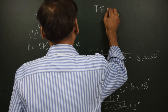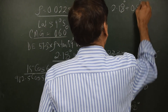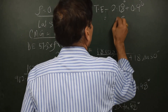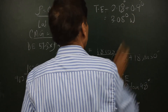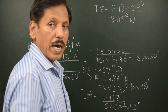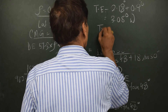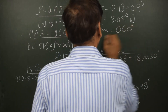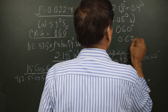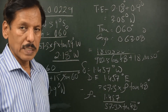Total error is 2.18 degrees plus 0.9 degrees, equal to 3.08 degrees west. Error west means gyro best — gyro reads more than true. So if the true course was 060, the gyro course will be 060 plus 3.08 degrees, which is approximately 063.1 degrees as the gyro course.